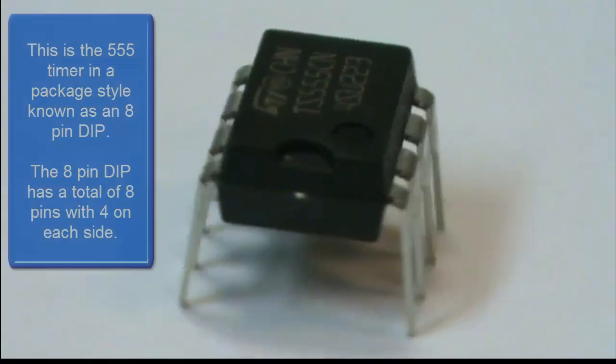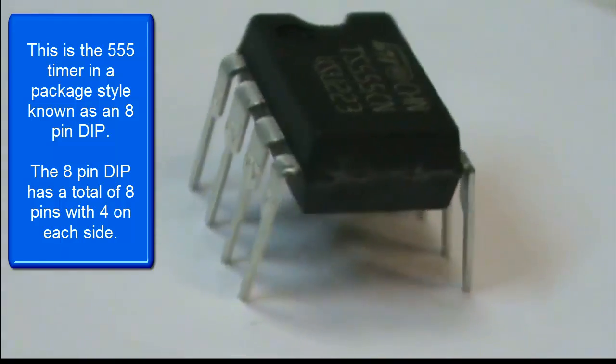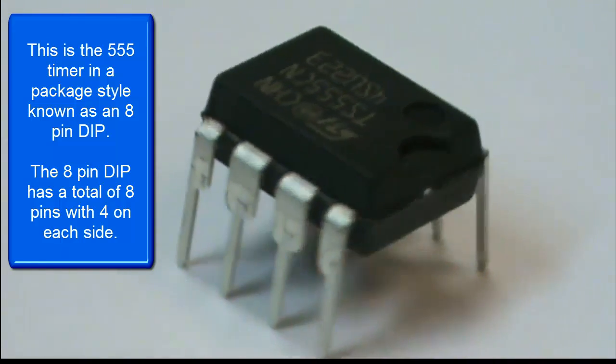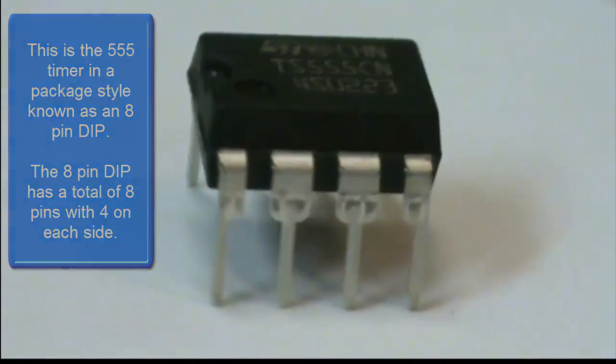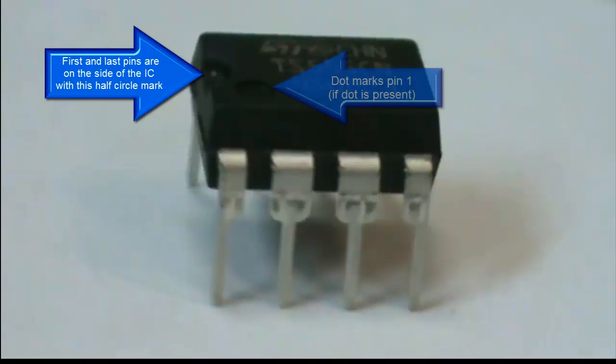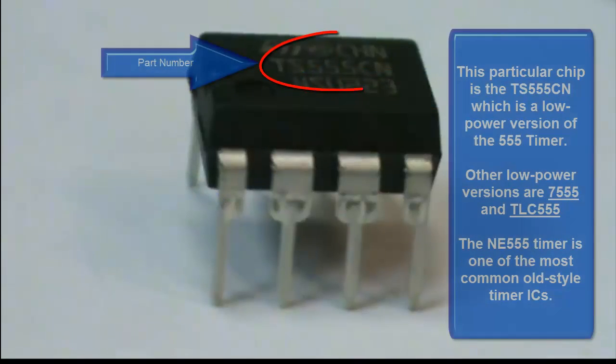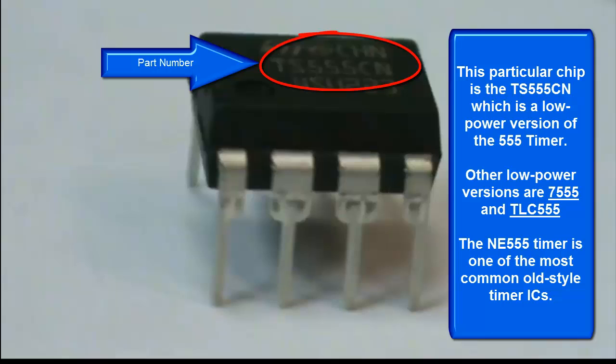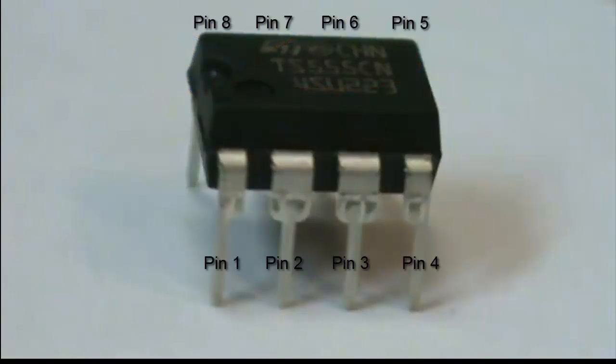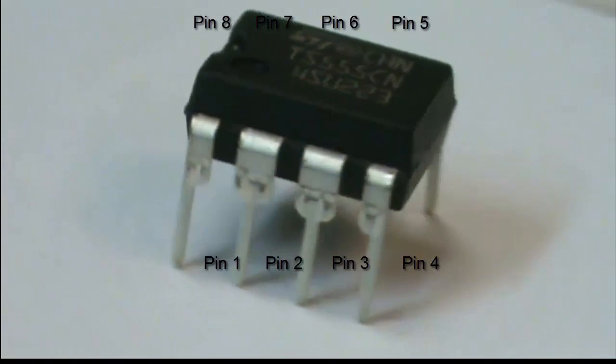Here's the actual package that it comes in. This is what we call an 8 pin dip. And the half circle on the chip marks the pin 1 and 8 side. The dot represents pin 1 if you have it. The part number in this case is a TS555 which is a low power version and there are other low power versions too. And these are the pin outs on the actual device.